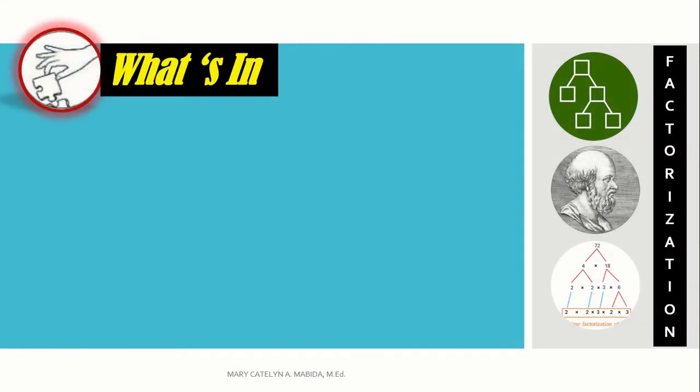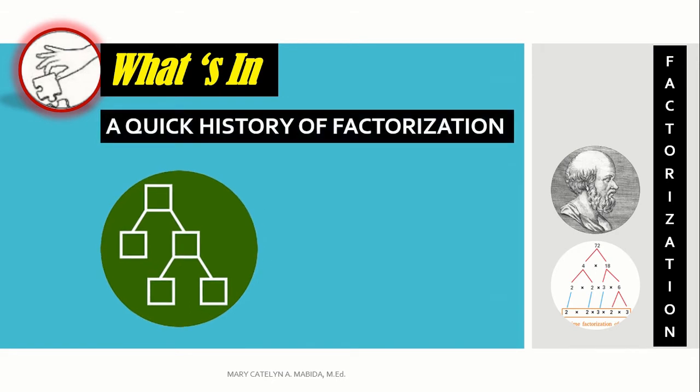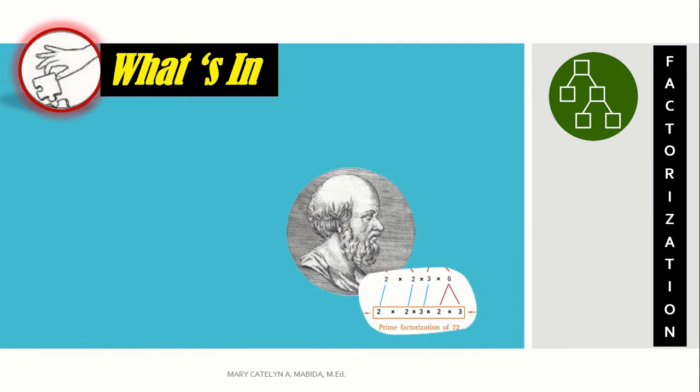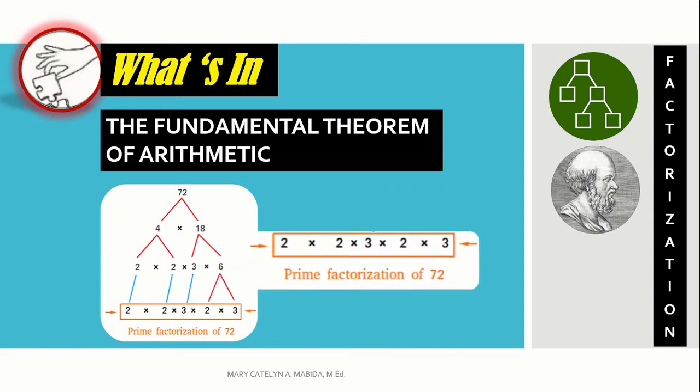What's in? A brief history of factorization in mathematics. Factorization was first considered by ancient Greek mathematicians in the case of integers. They proved the fundamental theorem of arithmetic, which asserts that every positive integer may be factored into a product of prime numbers, which cannot be further factored into integers greater than 1.